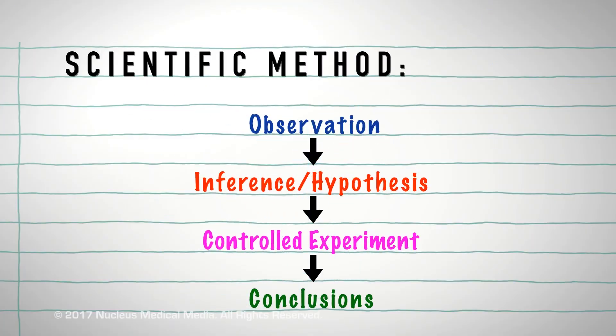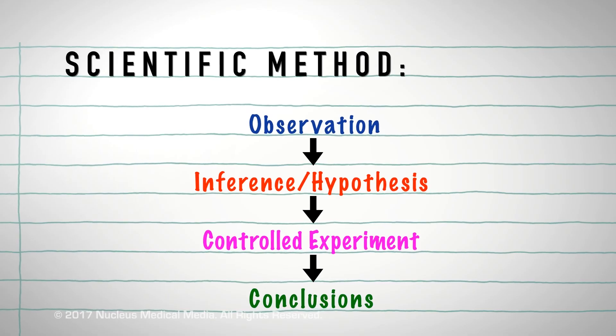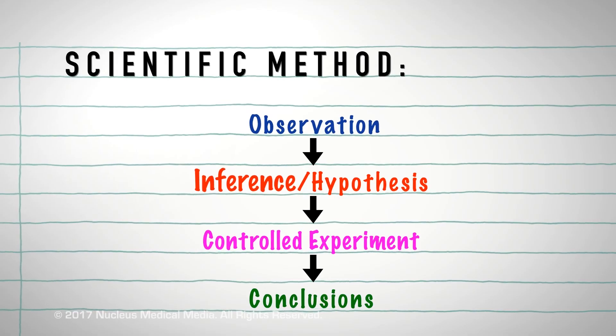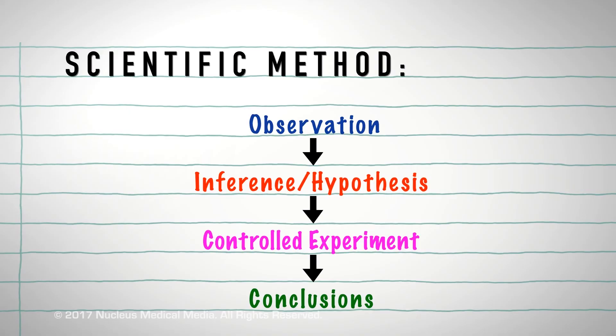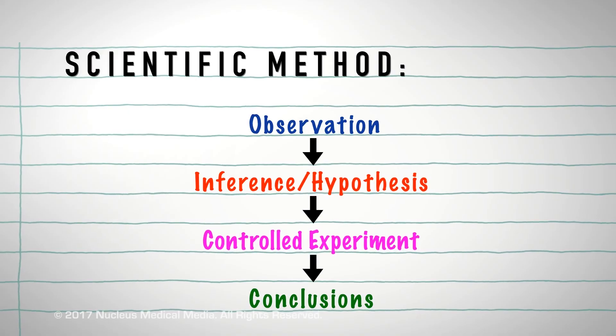In review, the basic steps of the scientific method are making an observation, forming an inference and developing a hypothesis, conducting a controlled experiment, and drawing conclusions.